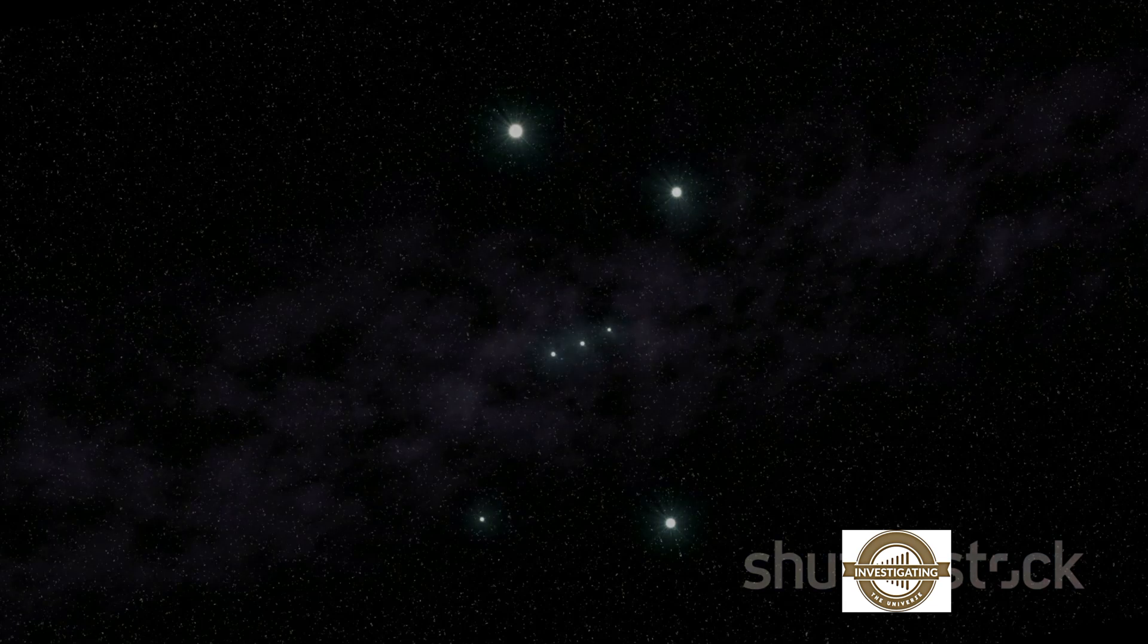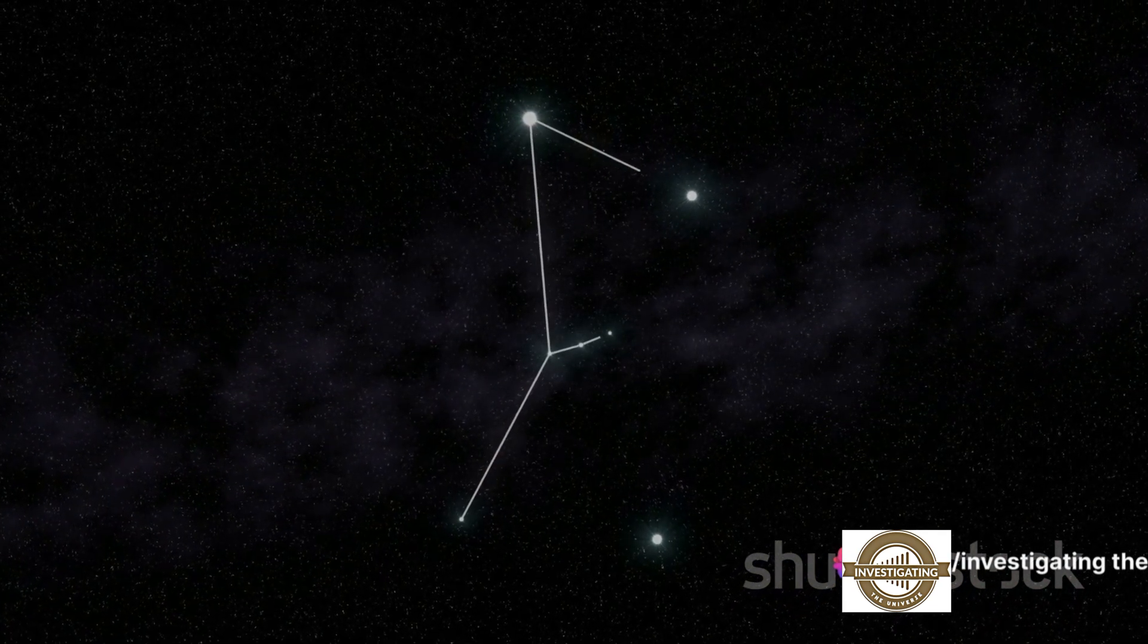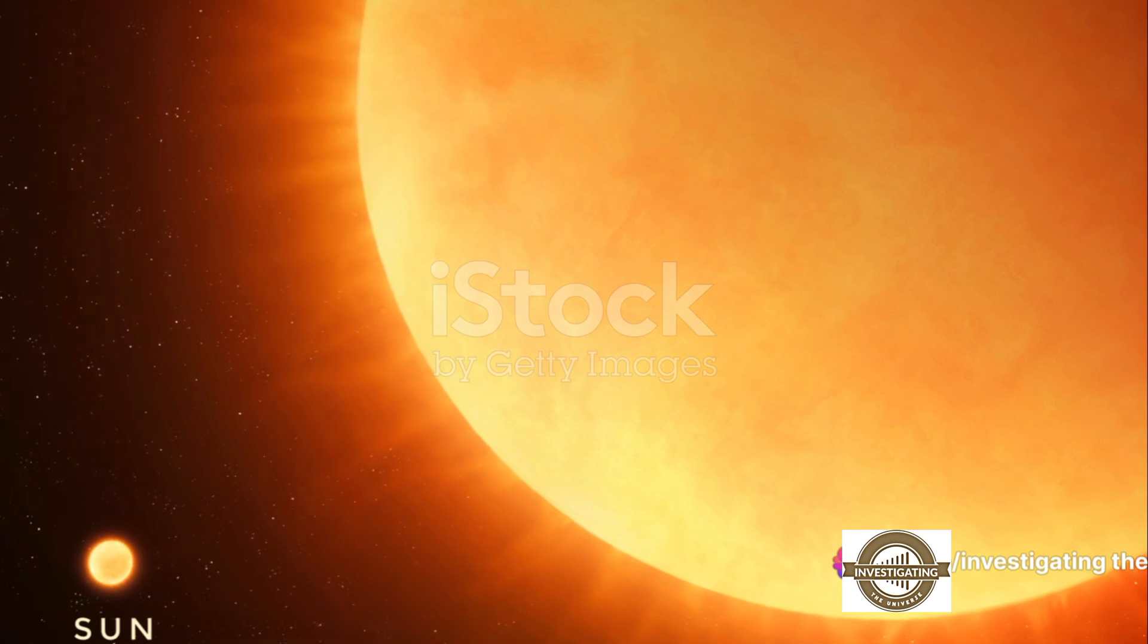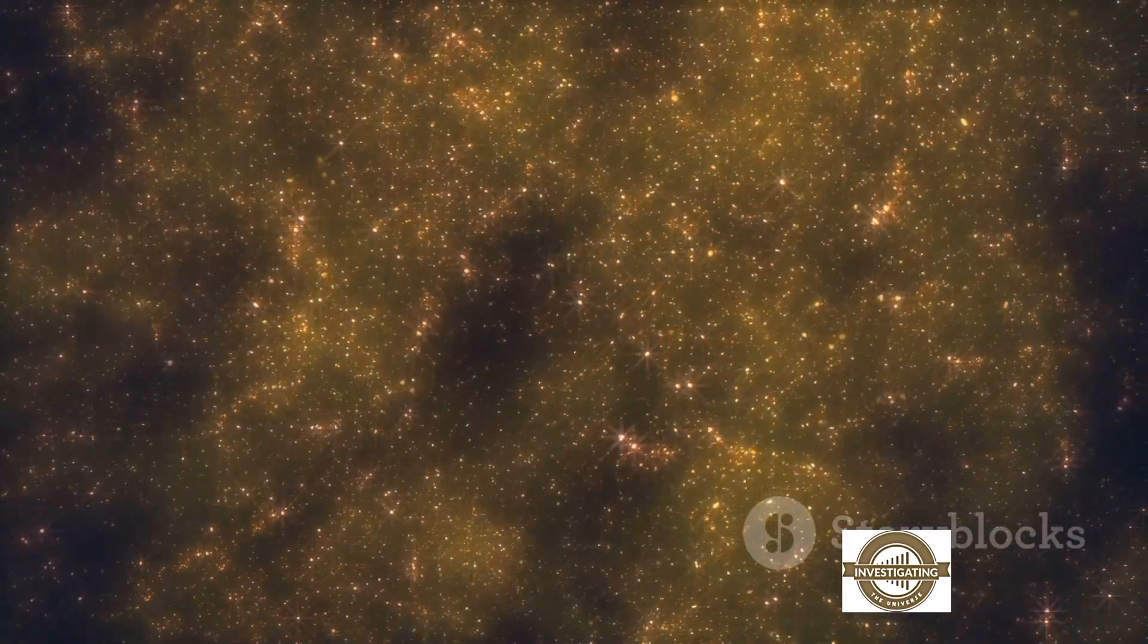Betelgeuse, a beacon of light in the constellation Orion, is a celestial marvel that has captivated astronomers for centuries. Positioned approximately 700 light-years away from us, it's not exactly a next-door neighbor, but in cosmic terms, it's relatively close.